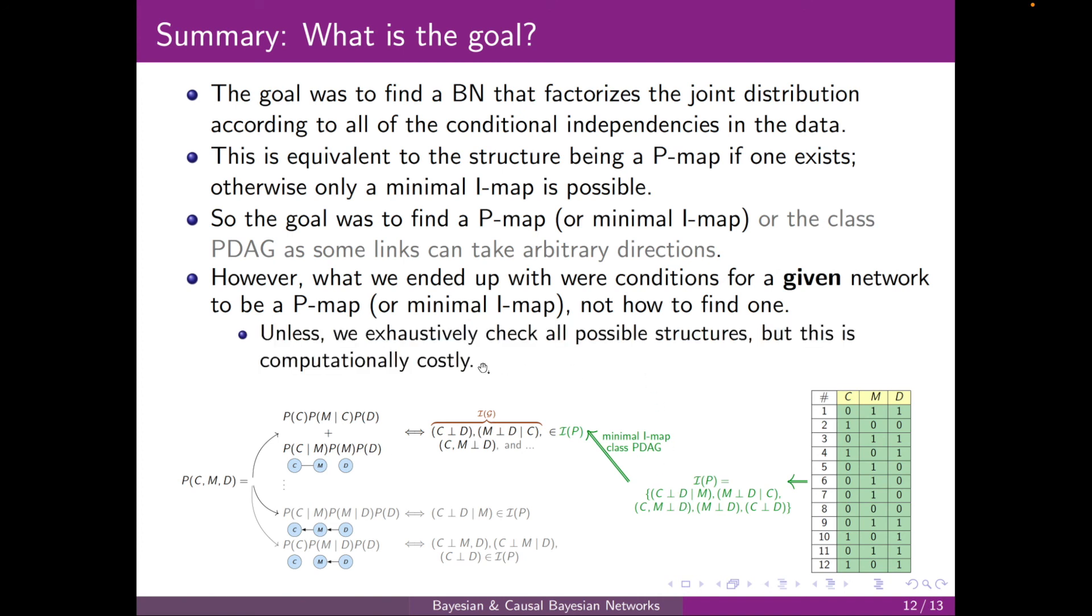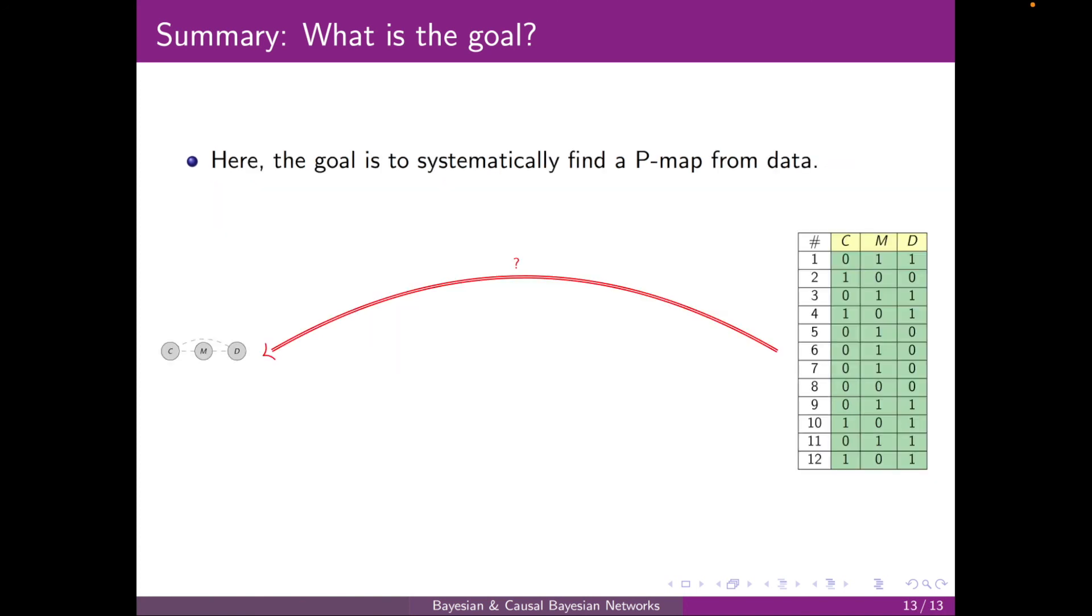You may say that, well, we can just exhaustively look into all of these cases and find the one that is a P-map. Yes, but as we discussed, this is computationally costly and often infeasible. Here the goal is the same, we still want to find a P-map, but we want to do that systematically. How? We will see that in the next videos.